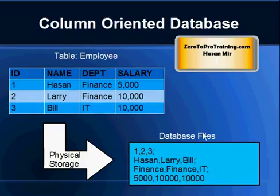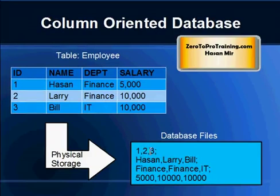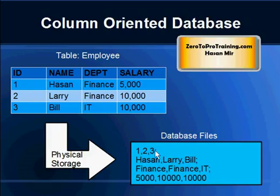Now compare this with a column-oriented structure. Here we are not taking the whole record of Hassan — 1, Hassan, Finance, 5000 — in one row. Instead, we read all the column values, like 1, 2, 3, and store them as one row in the backend file. We still have a separator between values and a separator representing the start of new column values. So 1, 2, 3 is one column set; Hassan, Larry, Bill is another set; and so on.